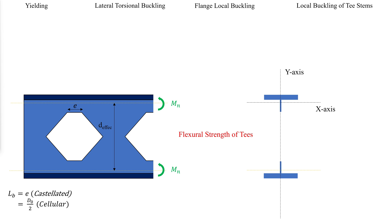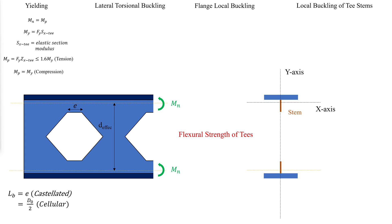For yielding, the strength is equal to MP. MP has different values depending on whether the stem is in tension or compression. MP can be calculated accordingly, with Sx being the elastic section modulus and Zx being the plastic section modulus.